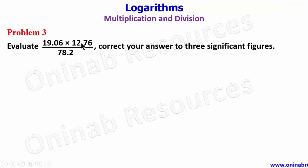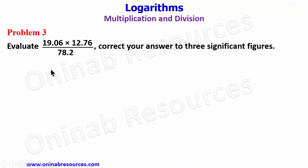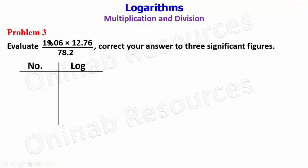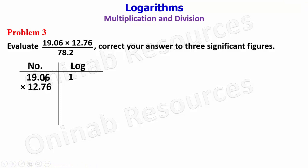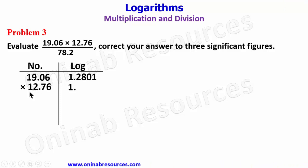For Problem 3, evaluate (19.06 times 12.76) divided by 78.2. Still in tabular form, we deal with the numerator first: 19.06 times 12.76. The integer part of the logarithm of 19.06 is 1. From the logarithm table, 19 under 0, differences of 6, gives 2801.